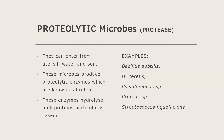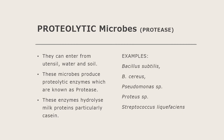The third type is proteolytic microbes, which produce proteases. They can enter from utensils, soil, and water. These microbes produce proteolytic enzymes known as proteases, and they hydrolyze milk proteins, particularly casein. Examples are Bacillus subtilis, Bacillus cereus, Pseudomonas proteolytica, and Streptococcus liquefaciens.